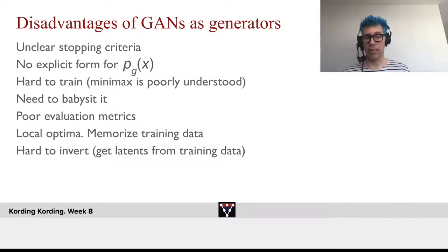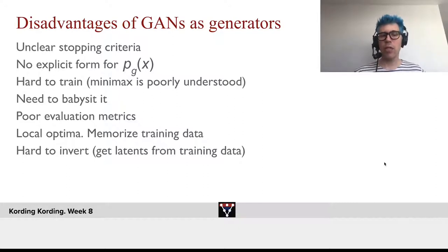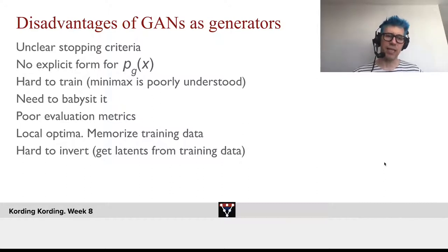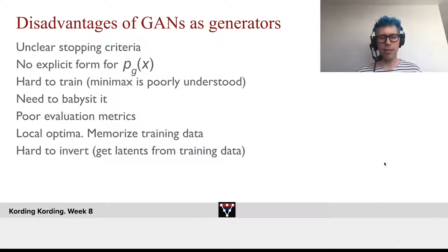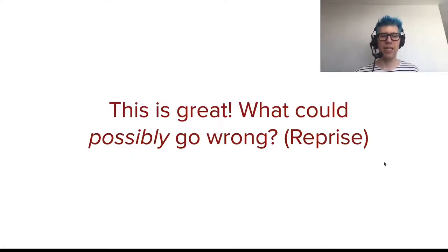It's hard to evaluate them. FID is a good metric, but it's not clear if this is really what we care about. There are lots of local optima — for example, the network can effectively memorize aspects of the training data. And it's very hard to invert. Even if we have a good model that goes from Z to an image, it's very hard to go from an image back to the Z.